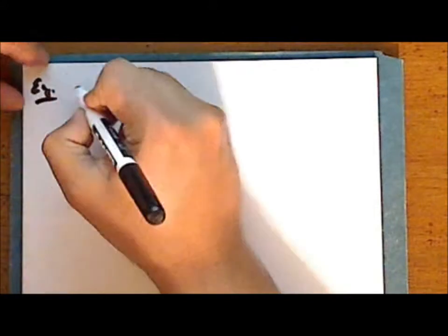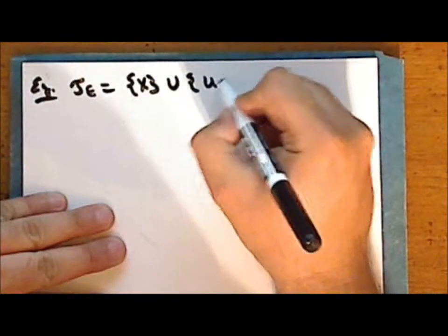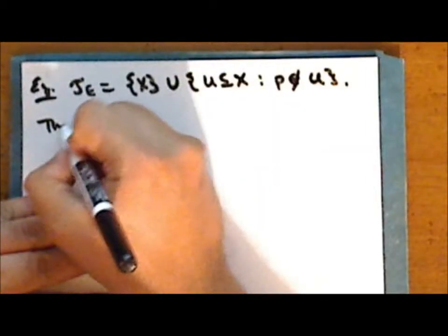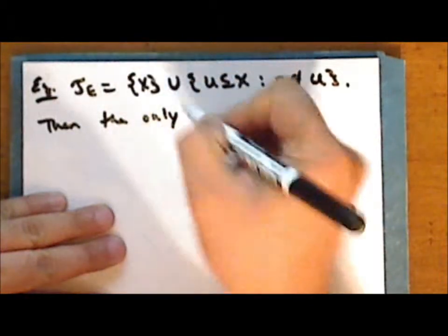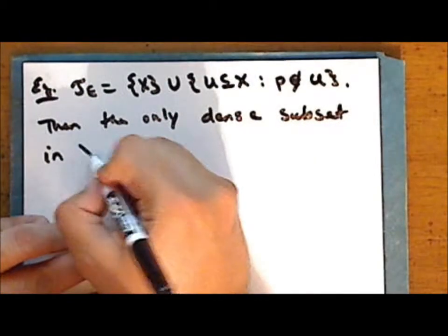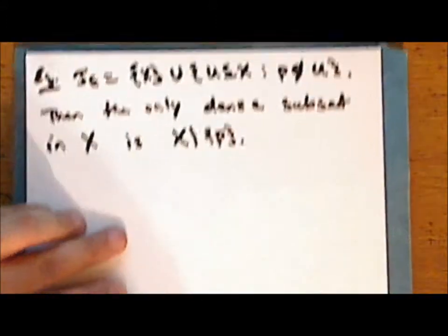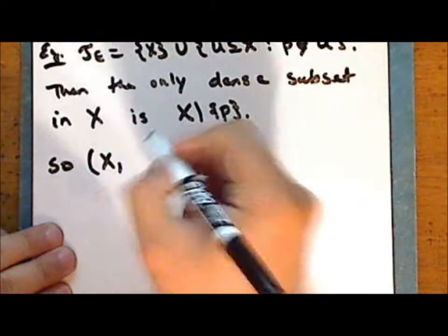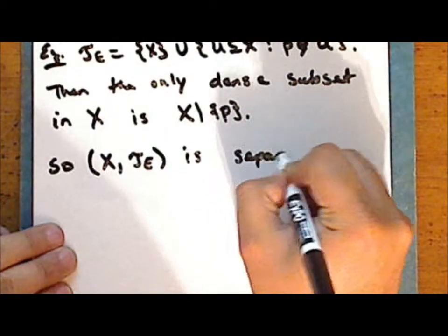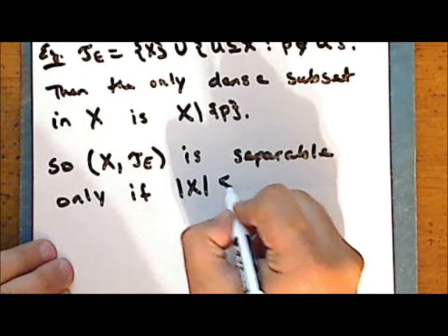Let tau sub e be the excluded point topology on the set X with p the excluded point. Then the only dense subset in the space is the complement of the singleton containing the point p. So a topological space with the excluded point topology is separable only if the underlying set is countable.